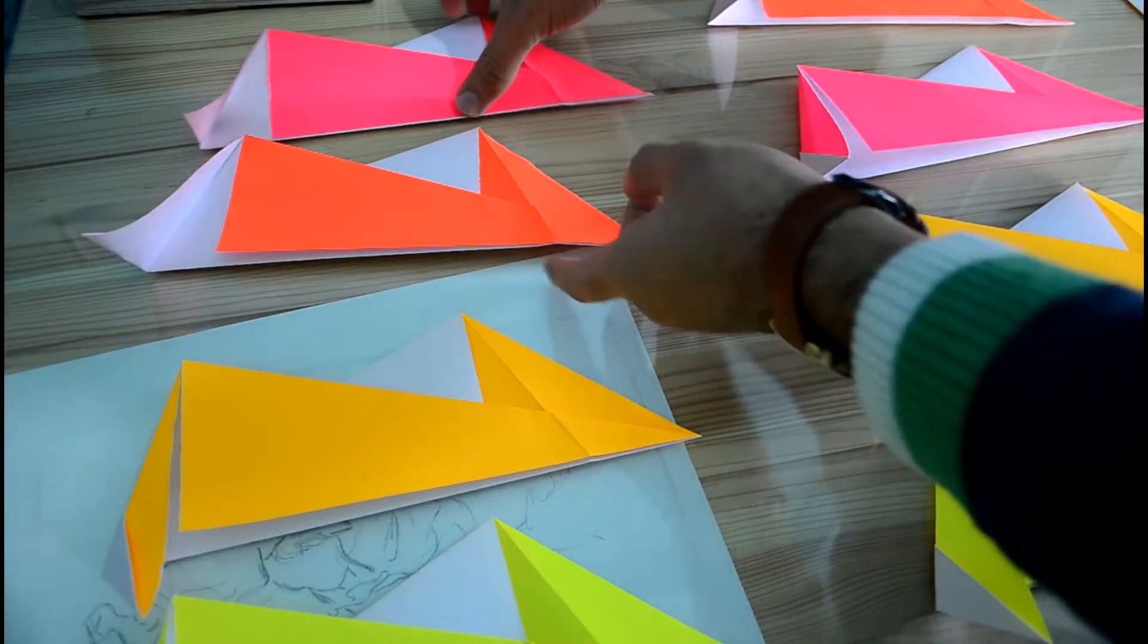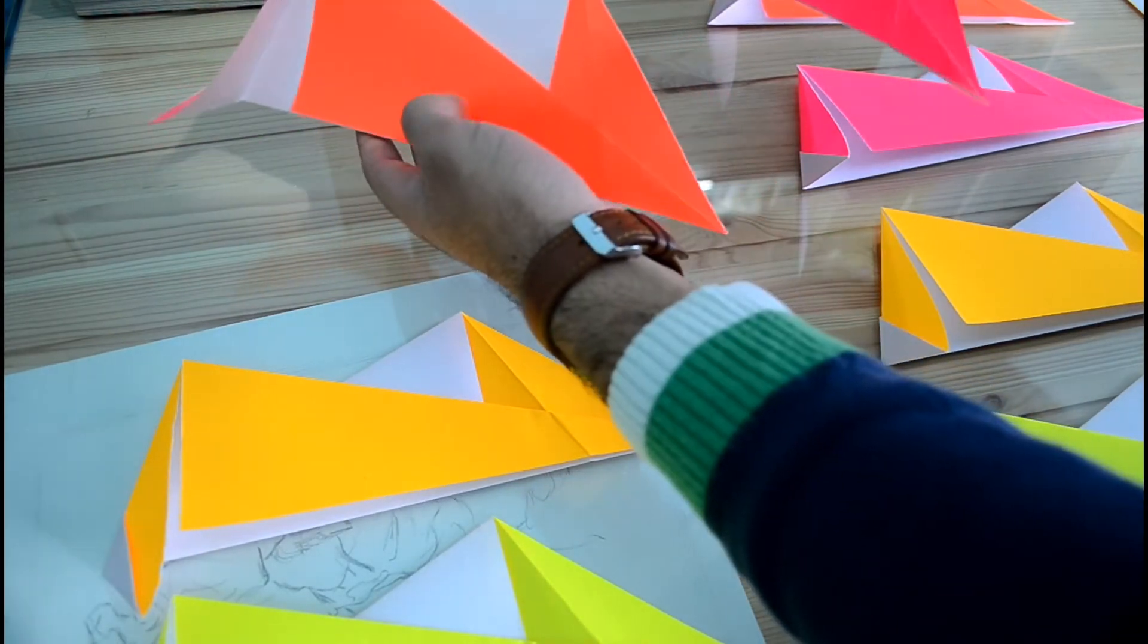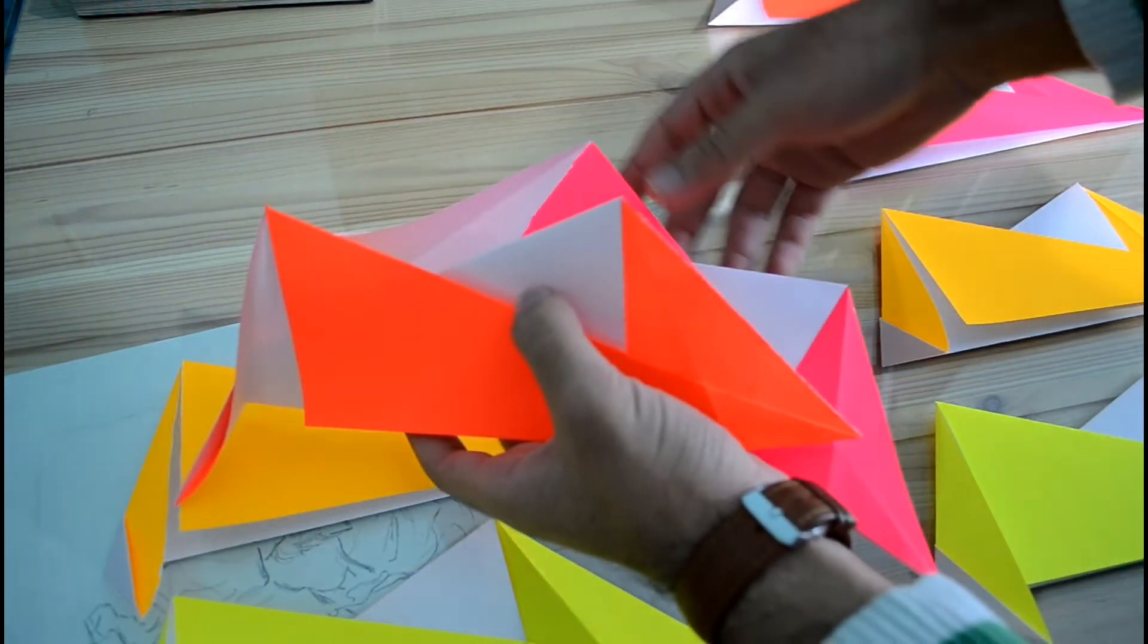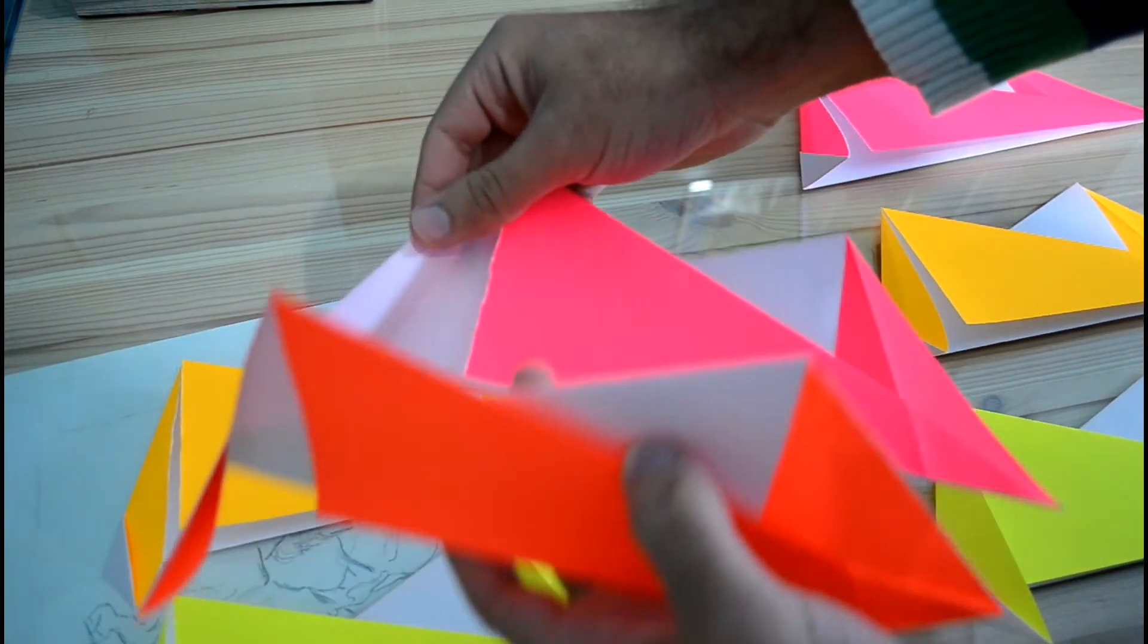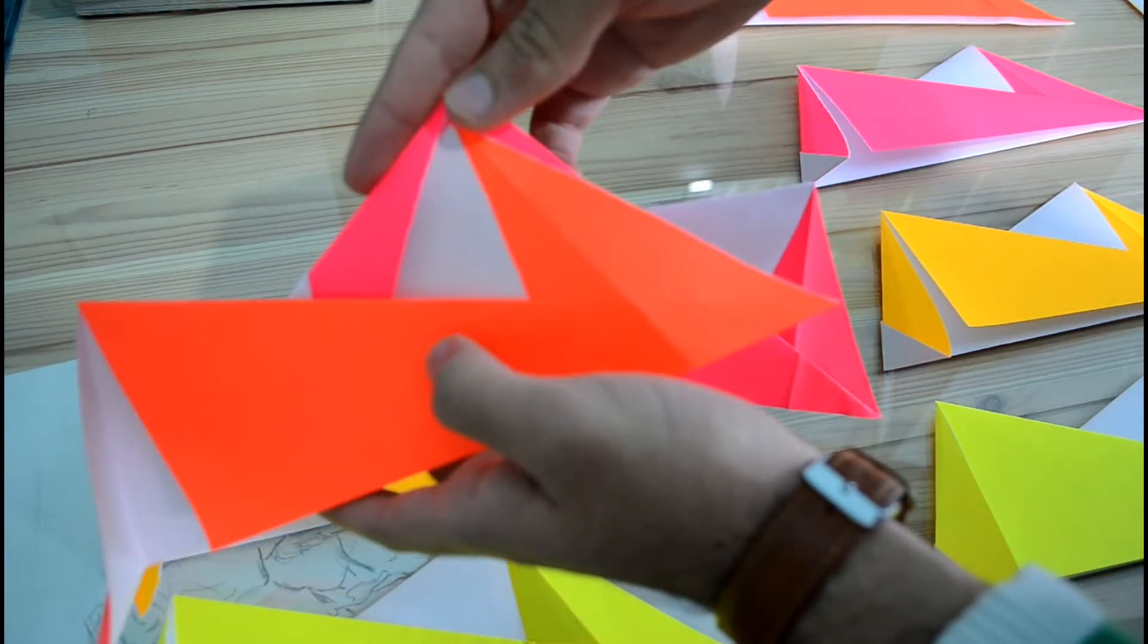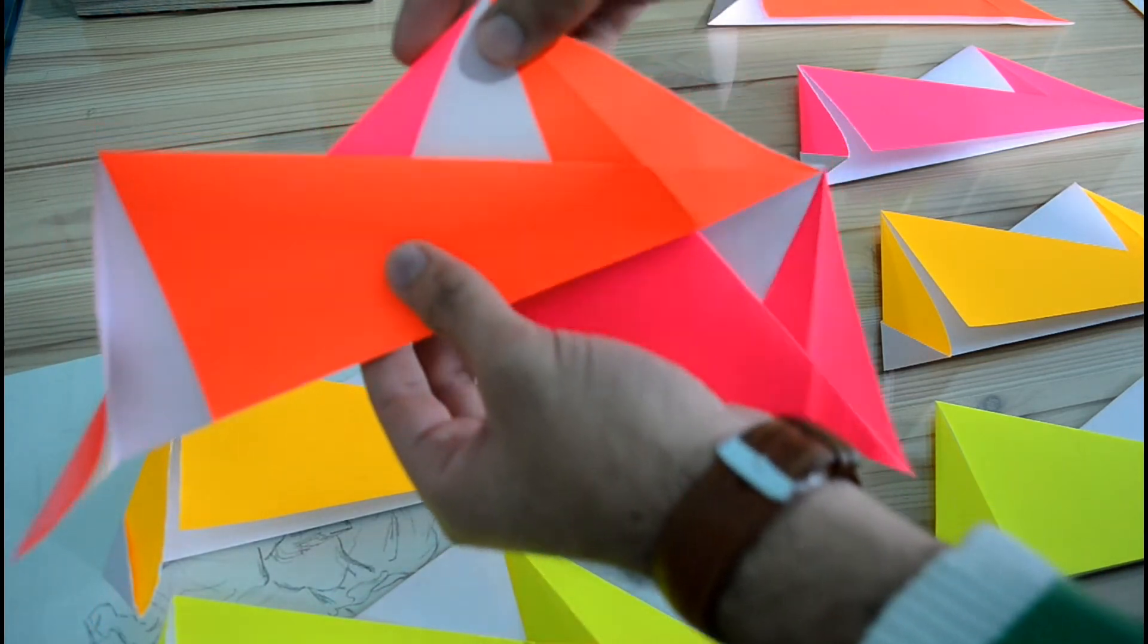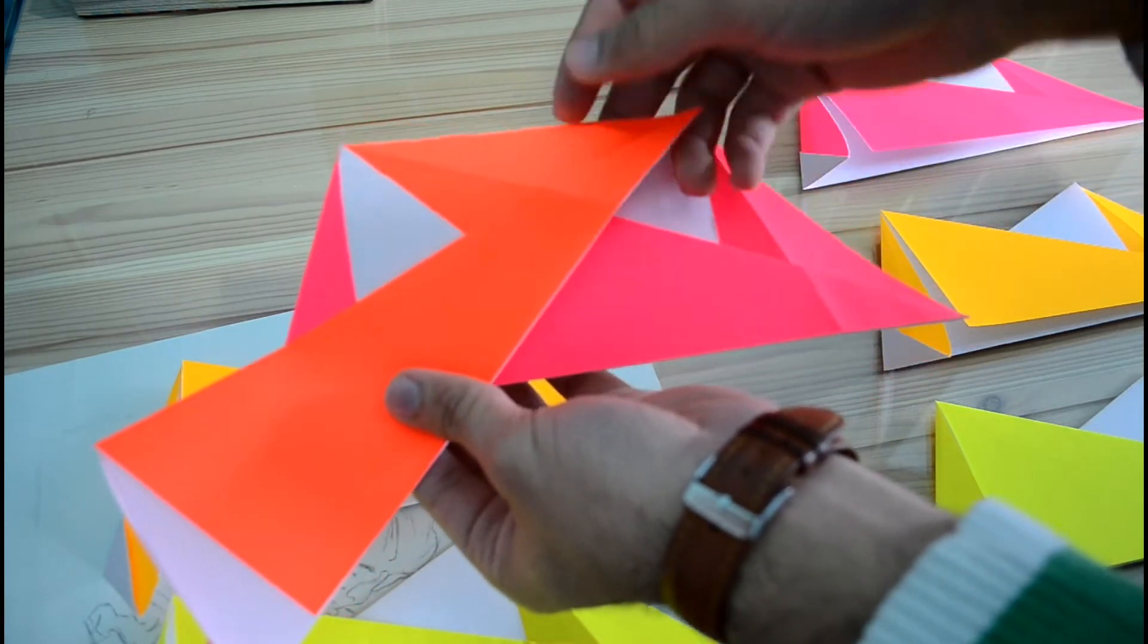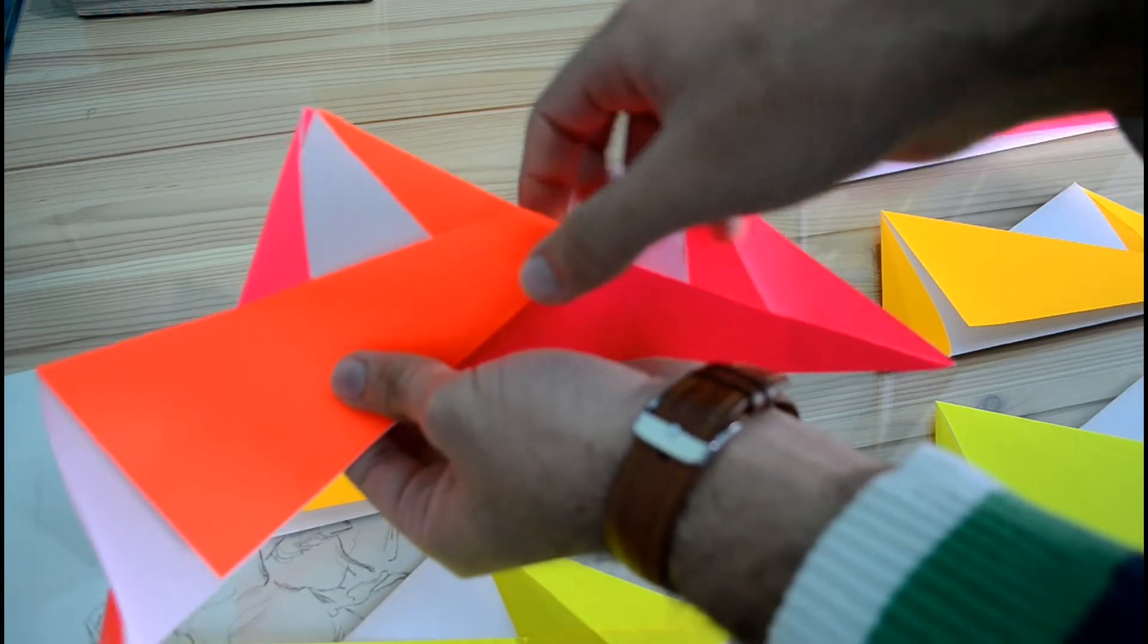Take two papers and fold this one. Now fold this part of the paper here like this, inside of this one, and this part of the paper right here like this.